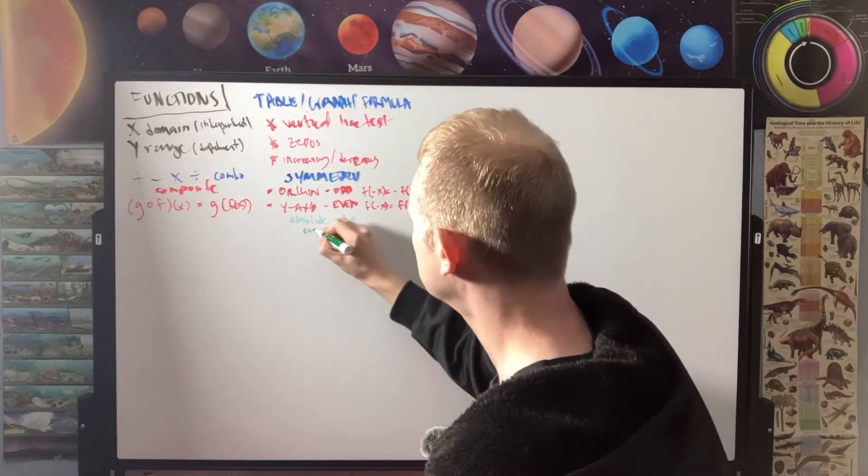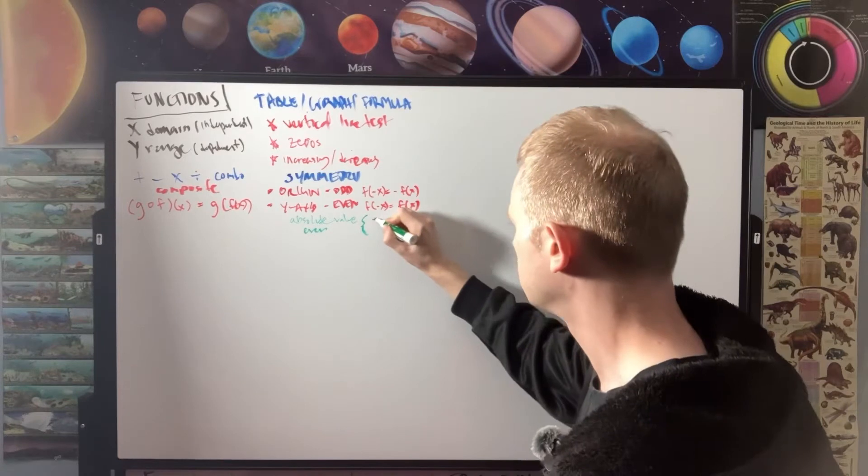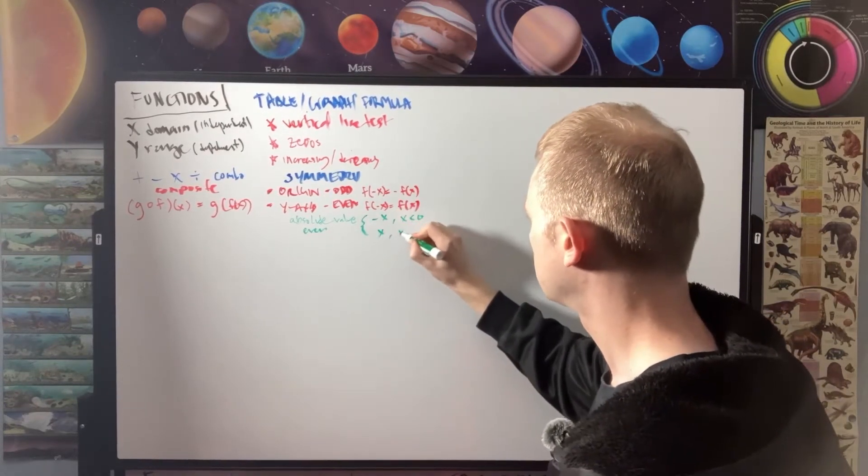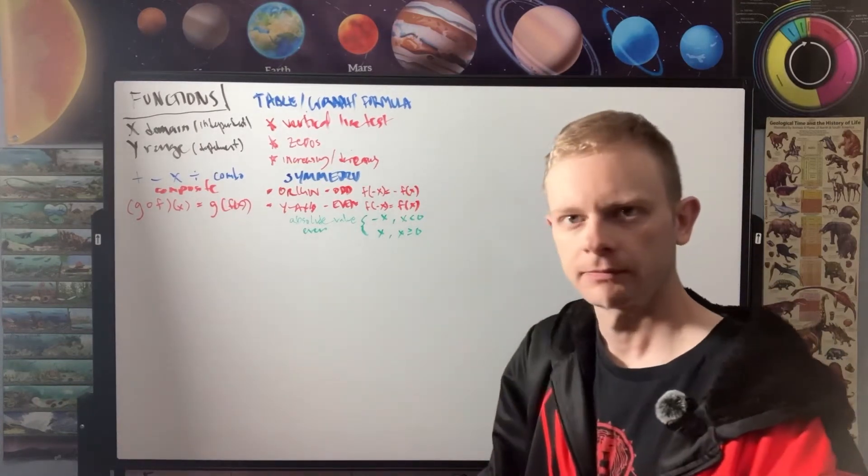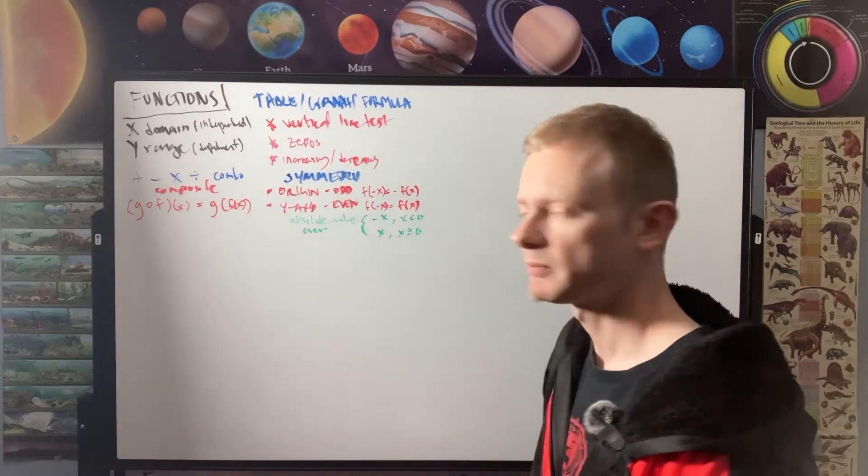This is an even function. And it would be represented as negative X for when X is less than zero and X for when X is greater than or equal to zero. And there we go. This is just the basic properties of functions.